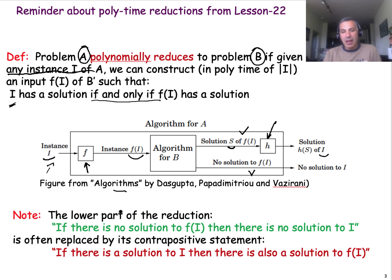I should note that usually we don't actually prove for this case that there is no solution. We don't prove that if there is no solution for F(I), then there is no solution for I. We prove the contrapositive statement, which is that if there is a solution for problem I, then there is also a solution for problem F(I).